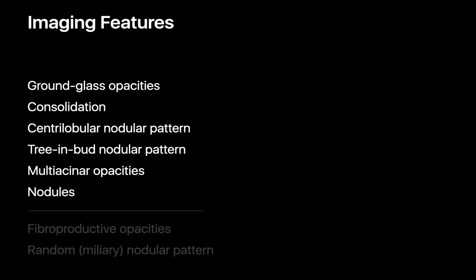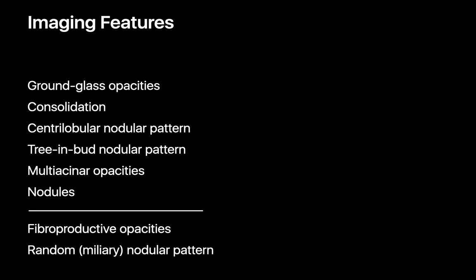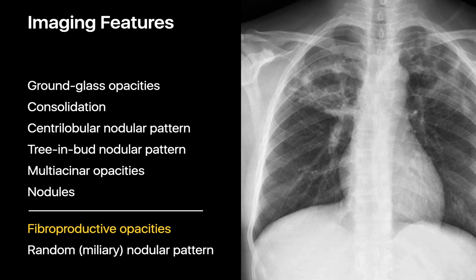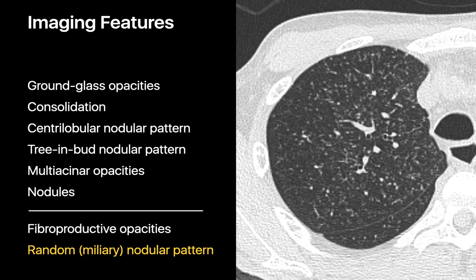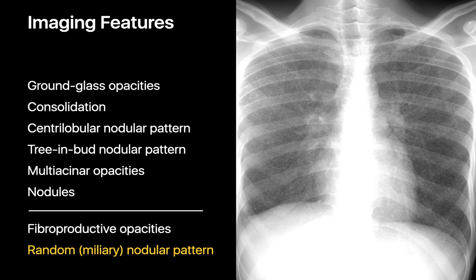Chronic granulomatous infections like TB, MAI, and endemic fungal infections that evade our immune system can sometimes manifest in two additional imaging patterns: fibroproductive lung opacities — usually in the upper lungs — and a random or miliary nodular interstitial pattern. Fibroproductive opacities may resemble a mixture of fibrosis and consolidation in the upper lungs with architectural distortion and sometimes cavitation. A random miliary pattern features innumerable discrete tiny dots diffusely throughout both lungs, often visible on chest radiography as a diffuse fine sandblasted appearance.